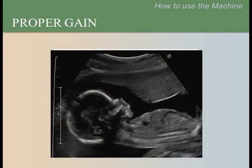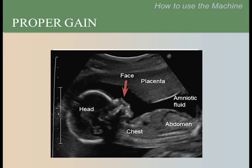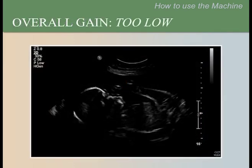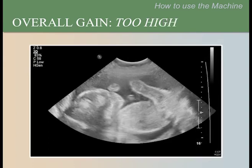We often need to increase gain when scanning heavier patients or patients who are near term. This is a profile view of the fetus. We know the gain is properly set because we can clearly see the head, face, chest, abdomen, spine, placenta, and amniotic fluid. In the next image, the overall gain is too low, which makes the image too dark and difficult to see fetal structures. When the overall gain is too high, the image becomes too bright, making it just as hard to see fetal parts.